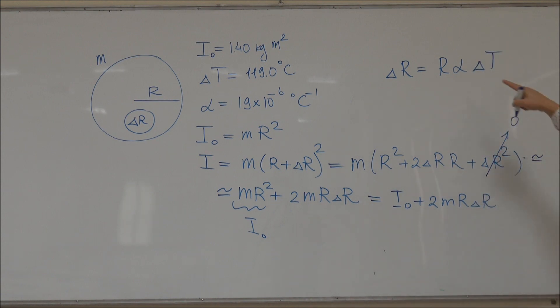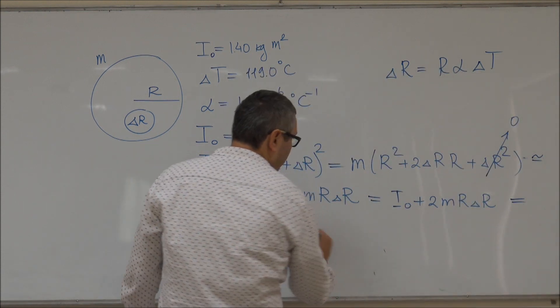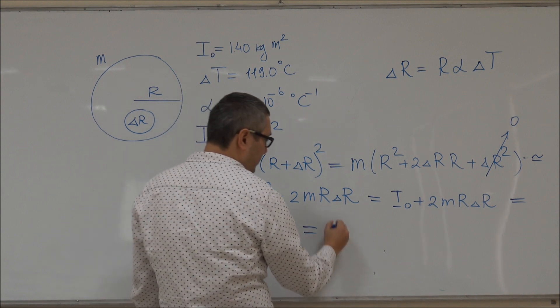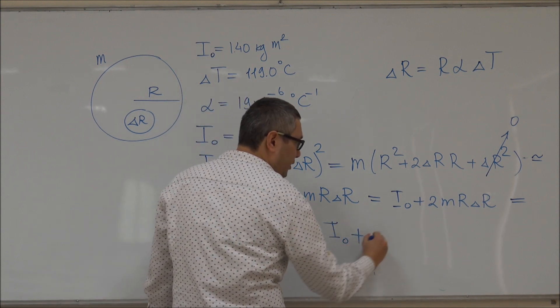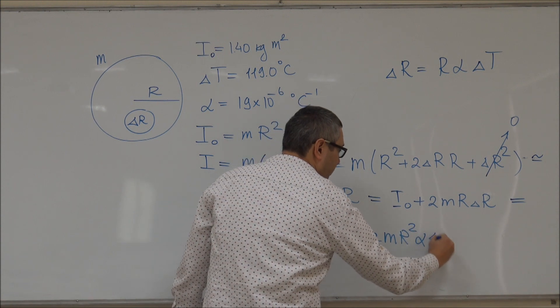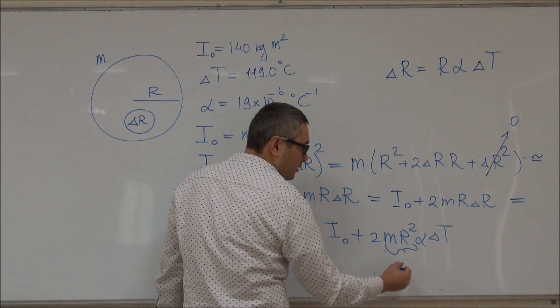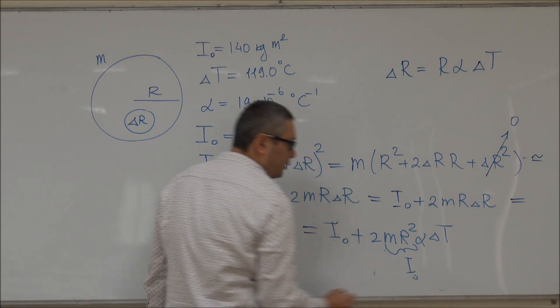So if we substitute it here, then we get I₀ + 2MR²αΔT. And this thing here again is I₀.